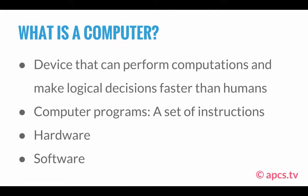So what is a computer? A computer is a device that can perform computations and make logical decisions faster than humans. Everything around you is a computer, including your calculator or your phone. A computer program is a set of instructions that the computer interprets and then performs tasks based on.